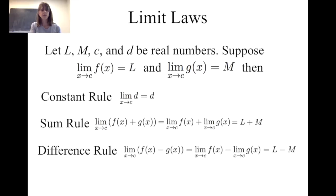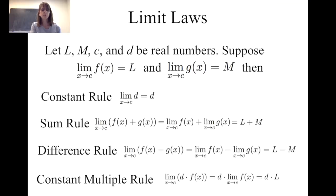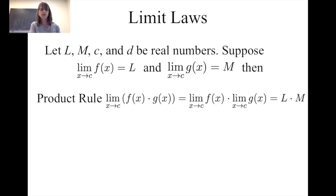If I replace the addition signs with subtraction signs I have the difference rule, which says the limit of a difference is simply the difference of the limits: l minus m. And the constant multiple rule: the limit of a constant d times a function f of x as x is close to c is simply d times the limit of f of x, which is d times l. The limit laws also include the product rule: the limit of a product f of x times g of x as x is close to c is equal to the product of the two limits, l times m.